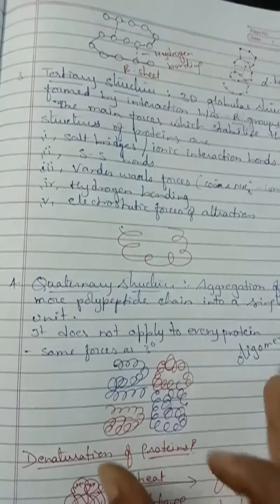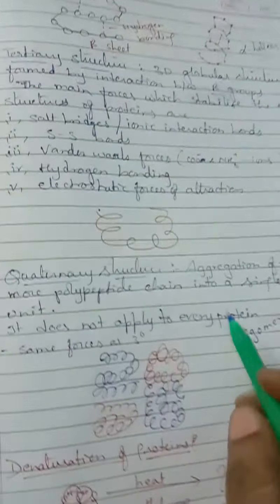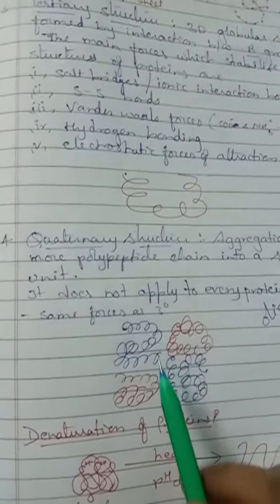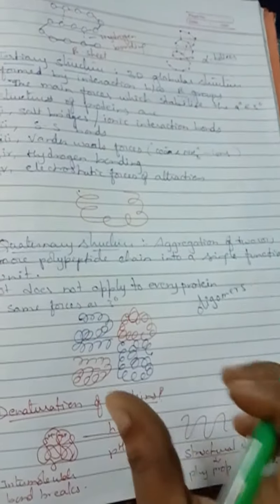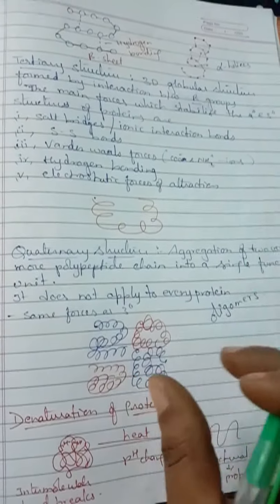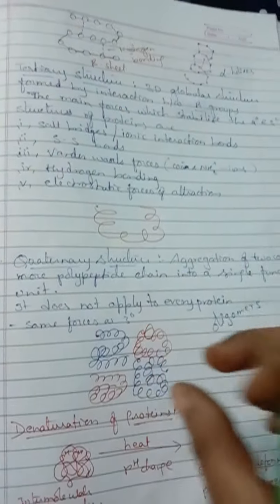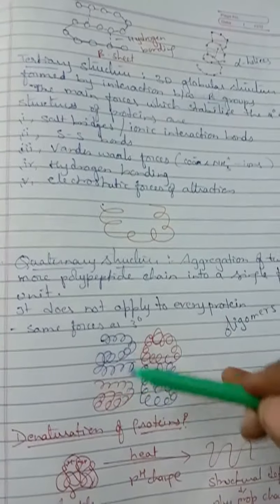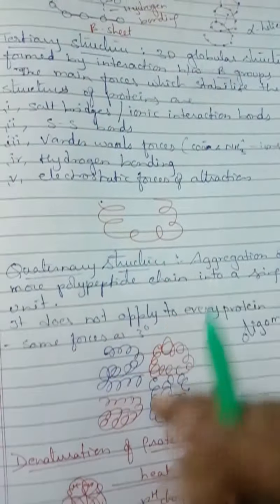These are the four structures associated with the shape of proteins. In quaternary structure, all secondary and tertiary arrangements combine. Quaternary structure means aggregation of two or more polypeptide chains into a single functional unit — all acting as one functional unit. This does not apply to every protein, only to those with quaternary structure. The same forces acting in tertiary structure are also present in quaternary structure.